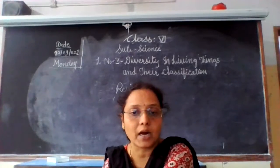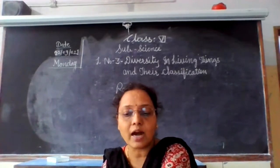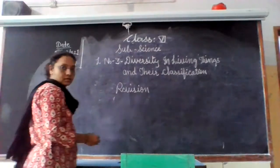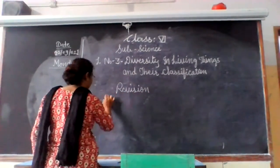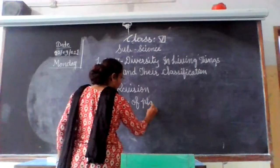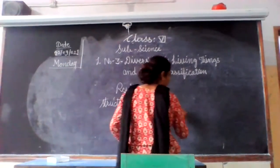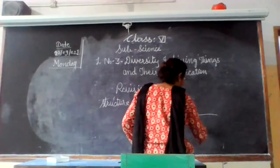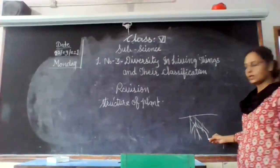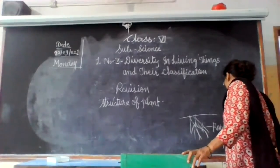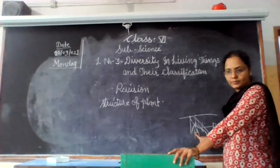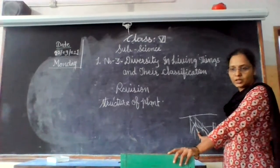Now, the basic structure of a plant. The plant structure can generally be divided into two parts: the root system and the shoot system. The root system is the part that goes deep into the soil. The roots absorb water from the soil, anchor the plant, and support the transport of various nutrients and minerals to the plant.